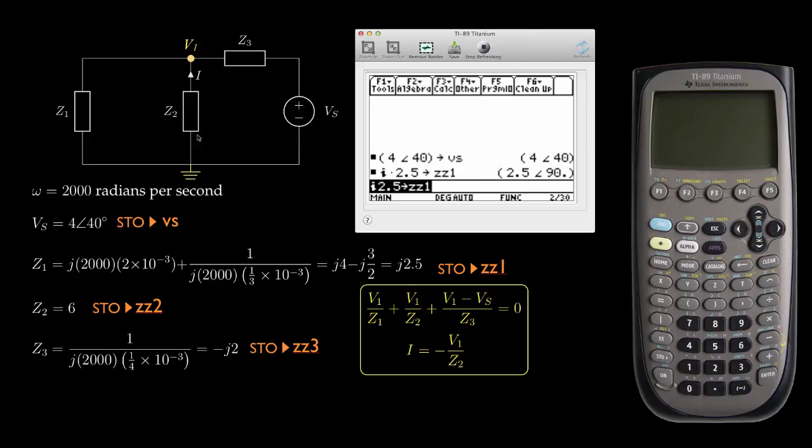Next, I'll store the impedance Z2, which is just a value of 6, into ZZ2. And then the final impedance Z3 is negative J times 2, and I'll store that in ZZ3. So now I have VS, ZZ1, ZZ2, and ZZ3 all stored.